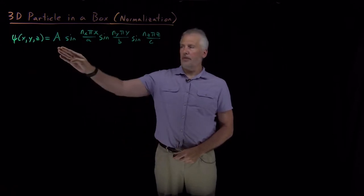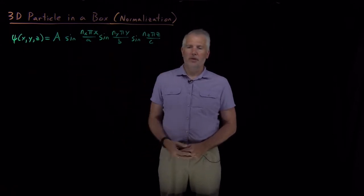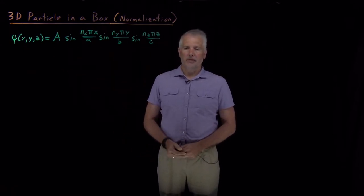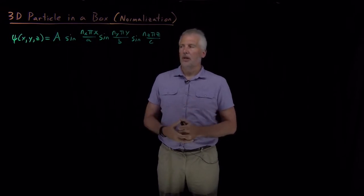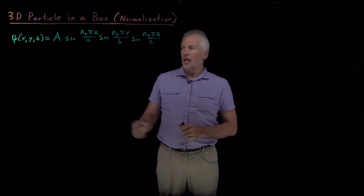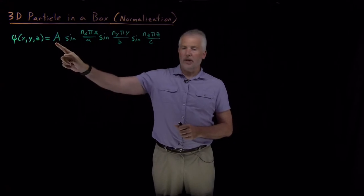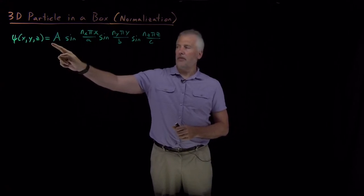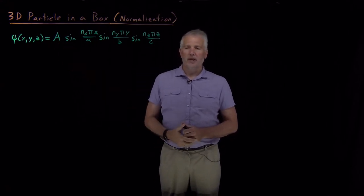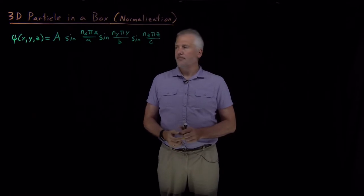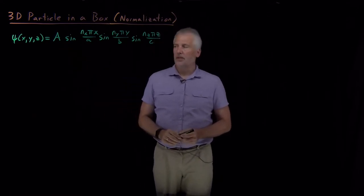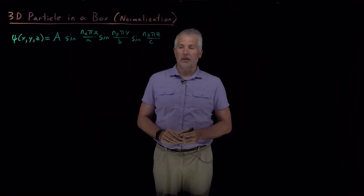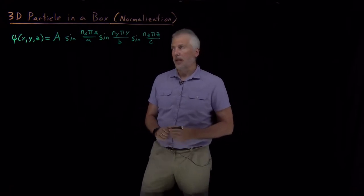We know how to write down the wave function for a three-dimensional particle in a box — a particle confined to a box where it has no potential energy inside and is confined to not leave the box. We almost know how to write it down: we haven't yet talked about the value of the constant A. The way we get that constant, as we did for the one-dimensional particle in a box, is by normalizing the wave function.